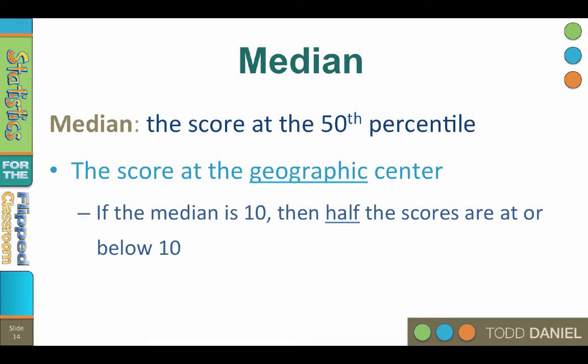The median is another name for the score at the 50th percentile, the score at the geographic center of the data. If the median is 10, then half of the scores are at or below 10, and of course half of the scores are above 10.